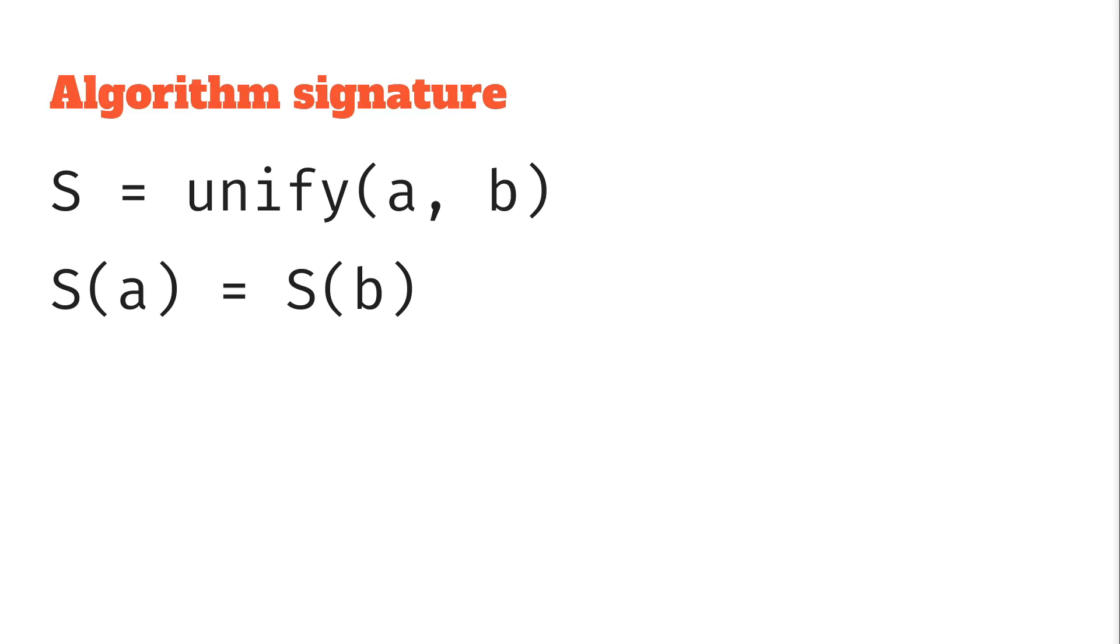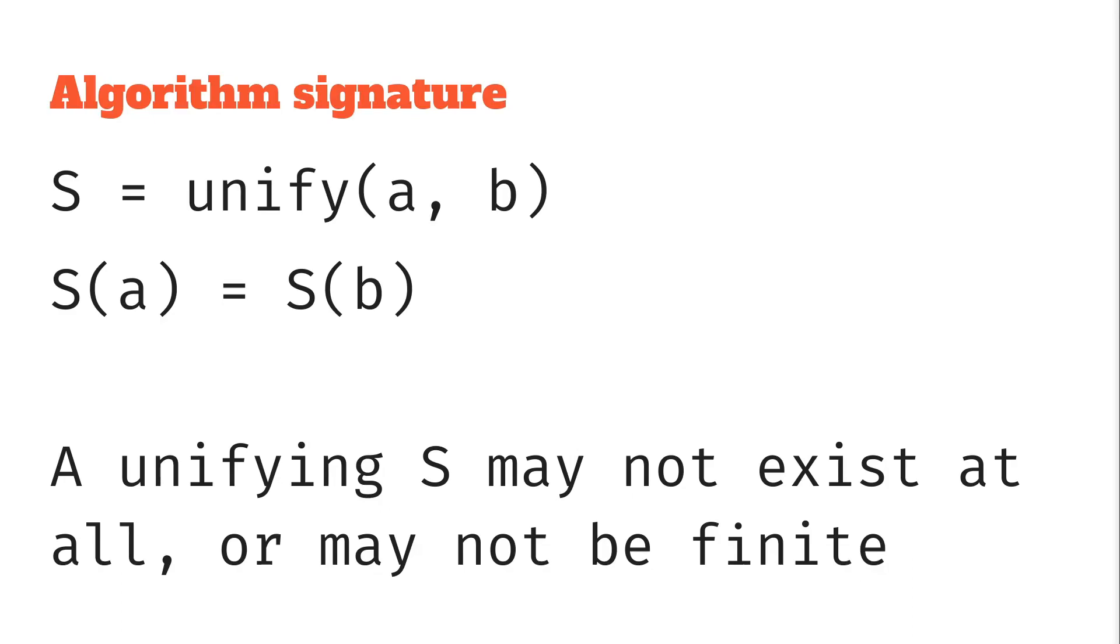But as we saw from the last two examples, it might not be possible to find a unifying substitution, because one doesn't exist, and also sometimes we'll want to restrict the unifying substitutions that we find to be finite, and one of those might not exist as well. So in that case maybe this function doesn't return anything or throws an error or something like that.